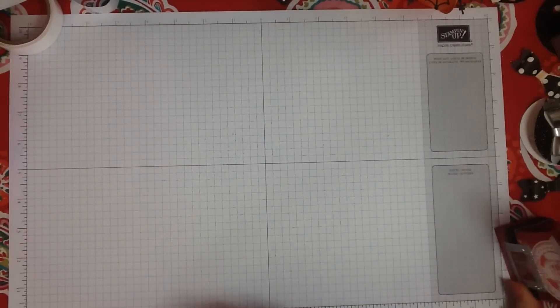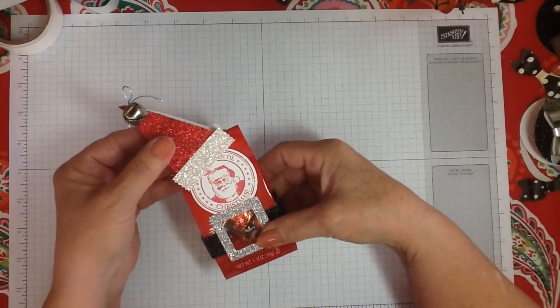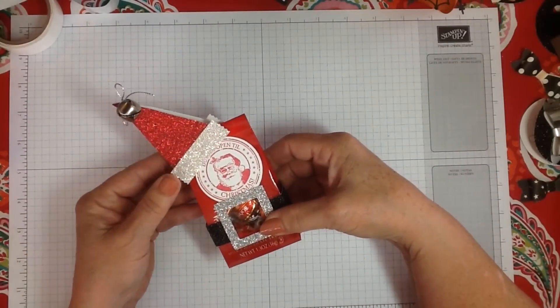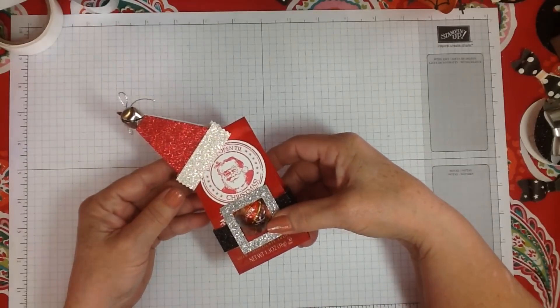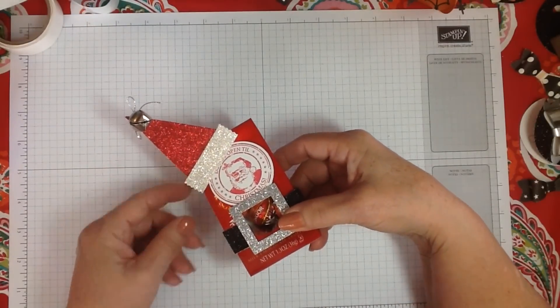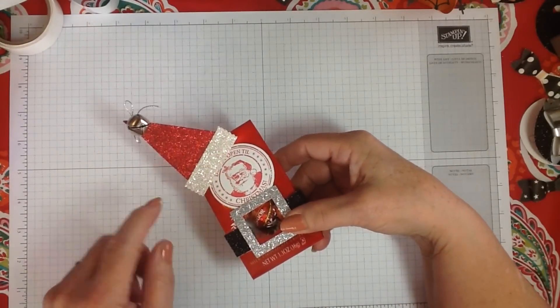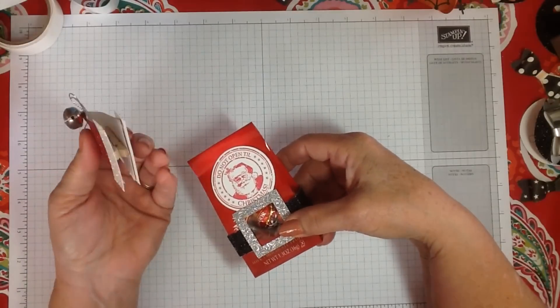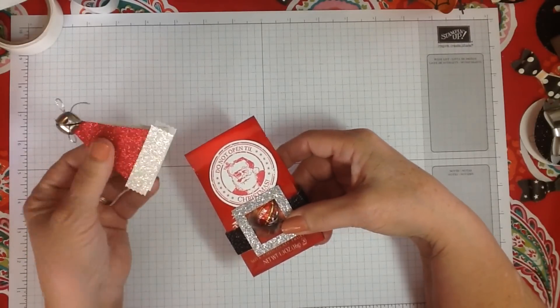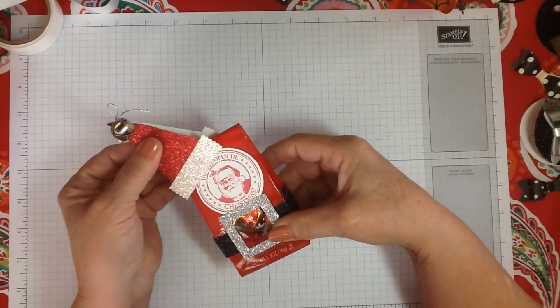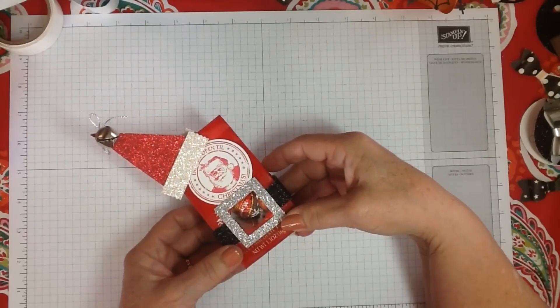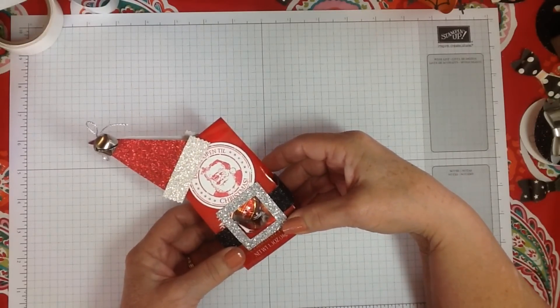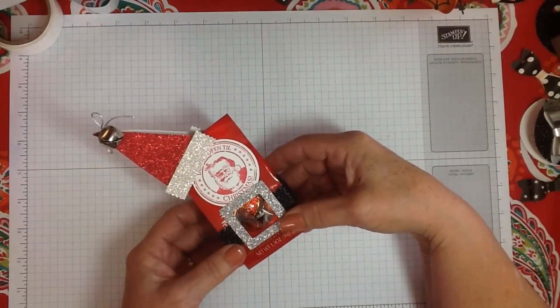And then if you want a bigger one, this little Santa hat is done with the triangle that's in the cutie pie framelits and then our new washi tape punch is the bottom of it. I just put it on the clothespin too with the little bell on the top just to kind of add some fun. A little candy. So there's a few more ideas.